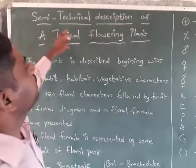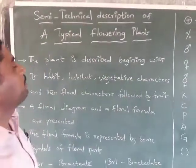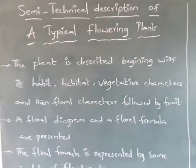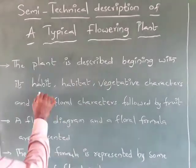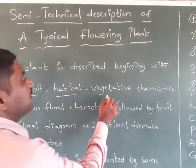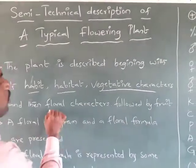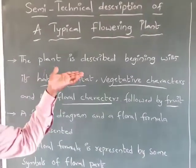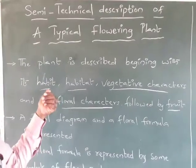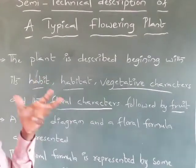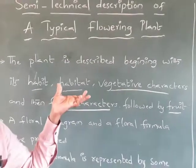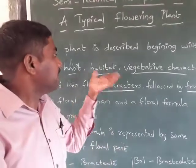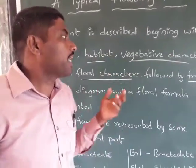In this video, we talk about the semi-technical description of a typical flowering plant. The plant is described beginning with the habit, habitat, and vegetative characters, and then the floral characters, followed by the fruit. The habit refers to the action and habitat refers to the natural place where the plant is living.